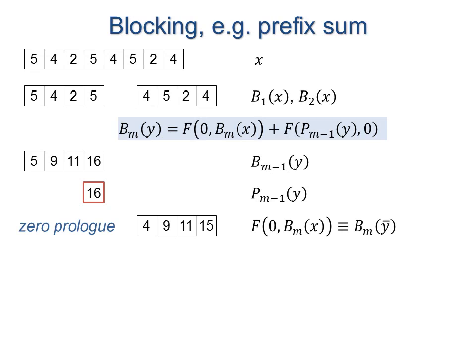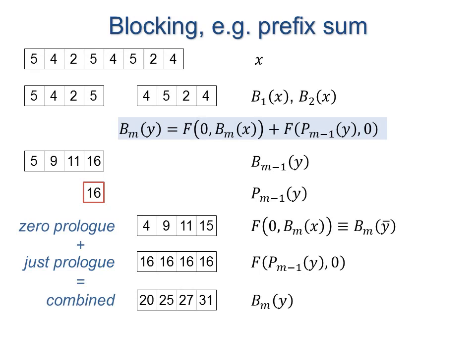First, we compute the prefix sum of the block, assuming a zero prologue. Second, we compute the output of the block, assuming just the prologue. For prefix sum, this simply replicates the value. Combining the two forms the output vector. The last element forms the prologue for the next block.